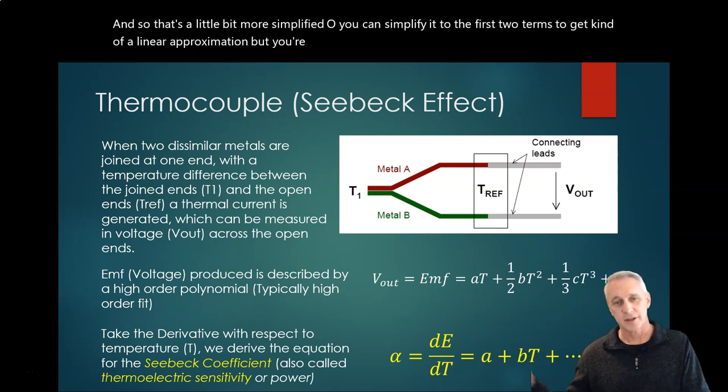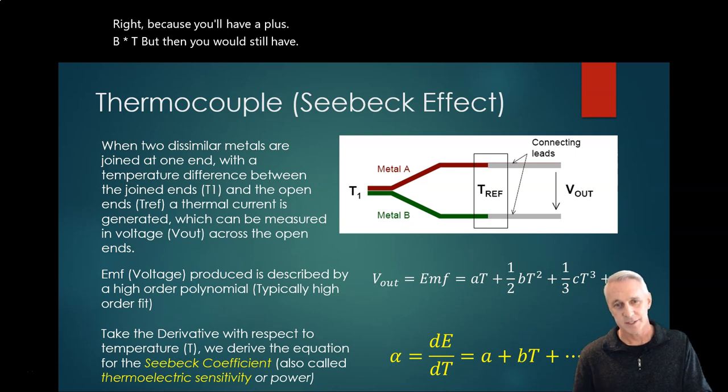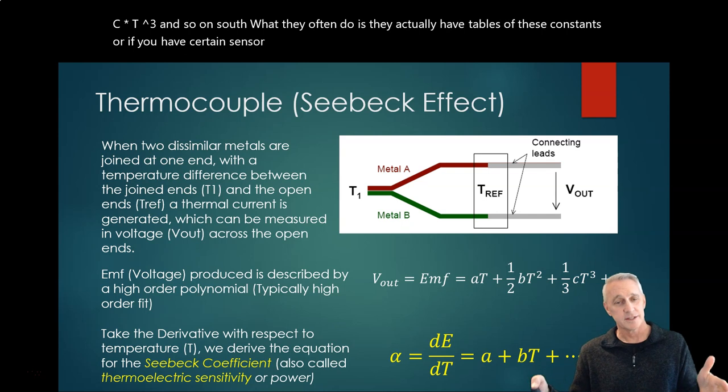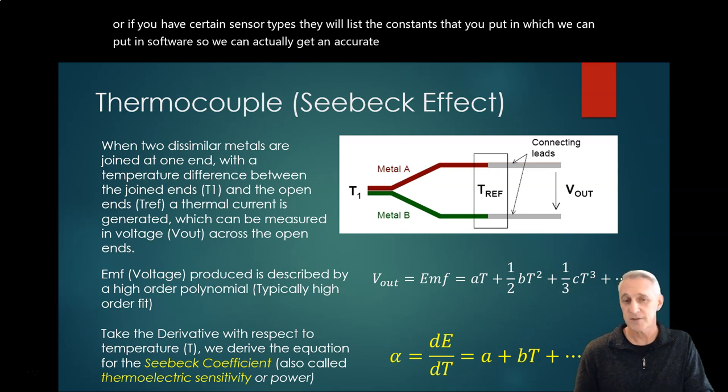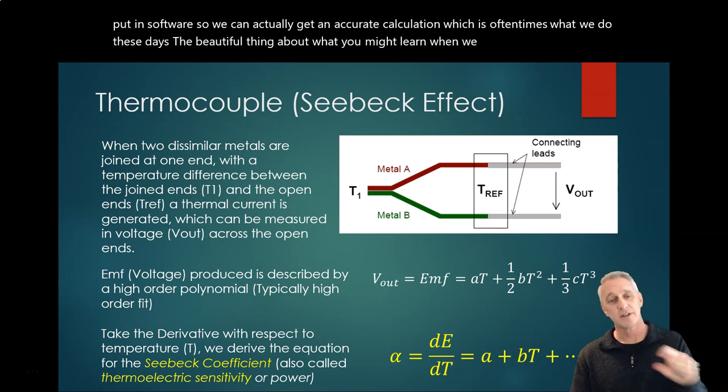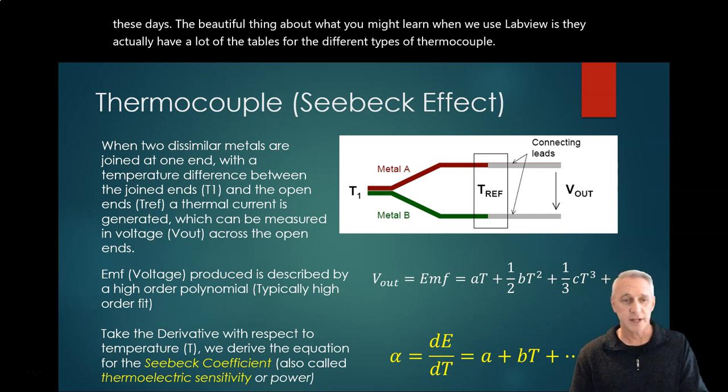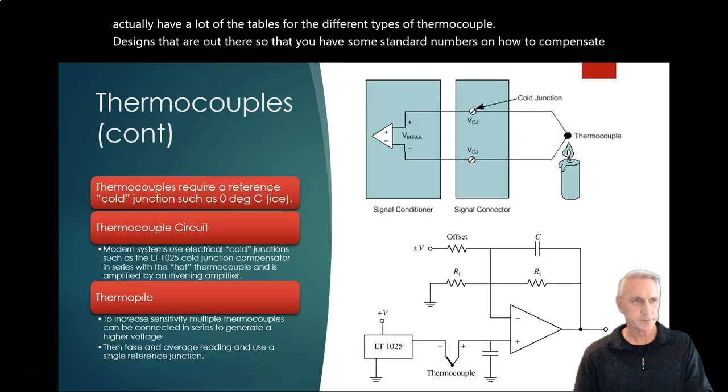You can simplify it to the first two terms to get kind of a linear approximation, but you're really missing the boat on all the other terms because you'll have A plus B times T, but then you would still have C times T squared and so on. So what they often do is they actually have tables of these constants. Or if you have certain sensor types, they will list the constants that you put in, which we can put in in software so we can actually get an accurate calculation, which is oftentimes what we do these days.